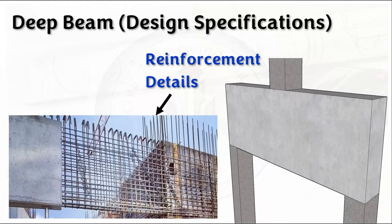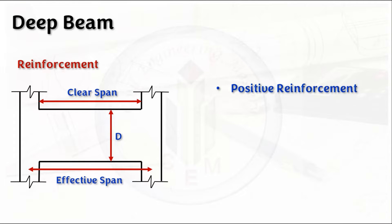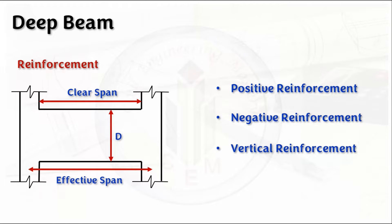There are many criteria available which can be a little complicated to understand, so let us discuss them one by one with examples — how we can arrange the reinforcement and how we can divide the zones. We have positive reinforcement, negative reinforcement, and vertical reinforcement. These reinforcements are similar to those in normal beams, but in deep beams there are some different criteria to provide this reinforcement as per IS codes and standards.